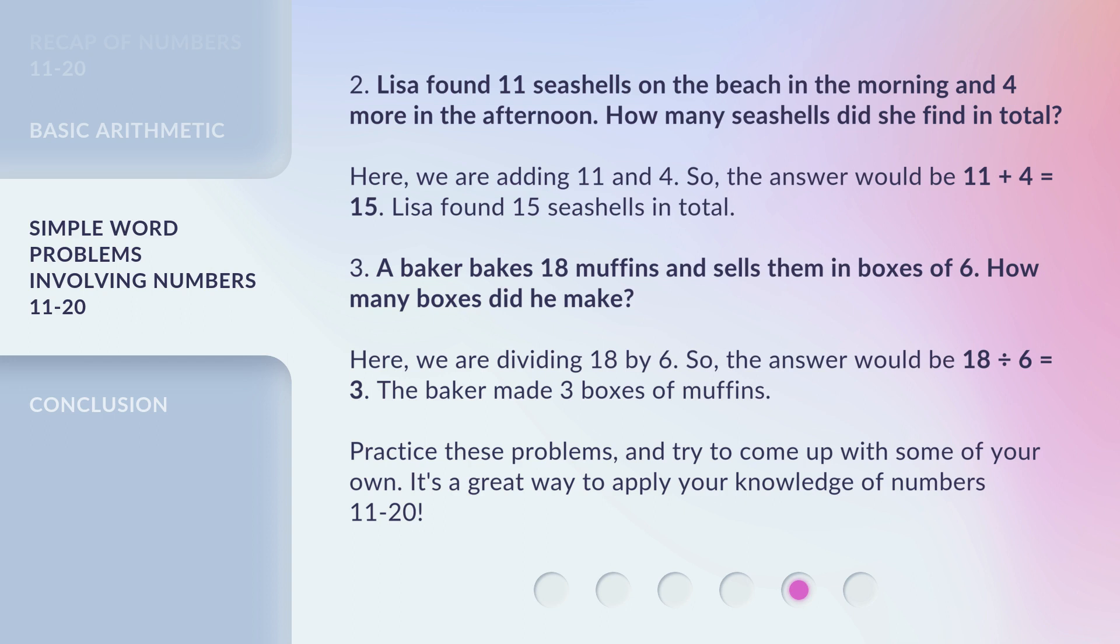Three. A baker bakes 18 muffins and sells them in boxes of 6. How many boxes did he make? Here, we are dividing 18 by 6. So, the answer would be 18 ÷ 6 = 3. The baker made 3 boxes of muffins.